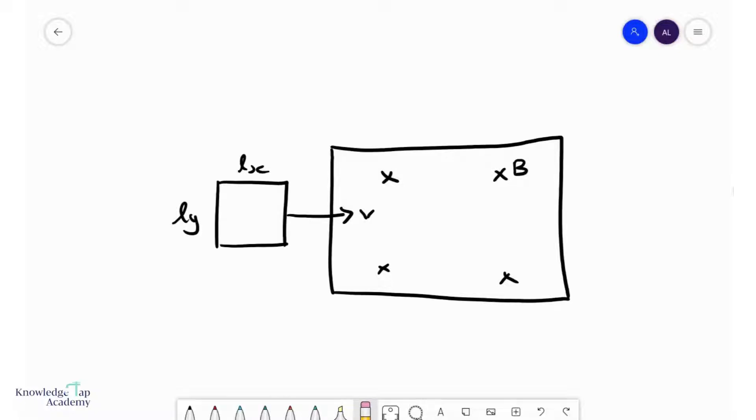When a square or rectangular coil moves into a region of uniform magnetic field like this one over here, it is actually possible to calculate the amount of EMF that's going to be induced in this coil. Now, let us see how to do that.